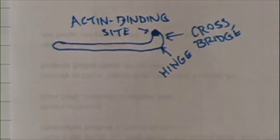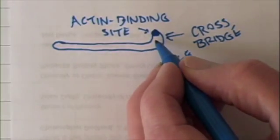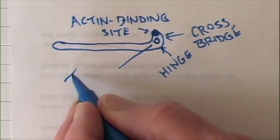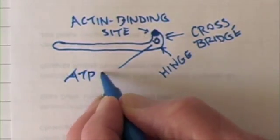Now the actin binding site is like a receptor. It binds to what? Actin. Also, the crossbridge contains an ATP binding site.